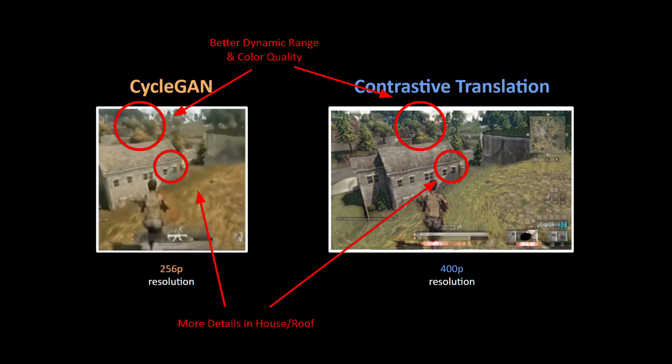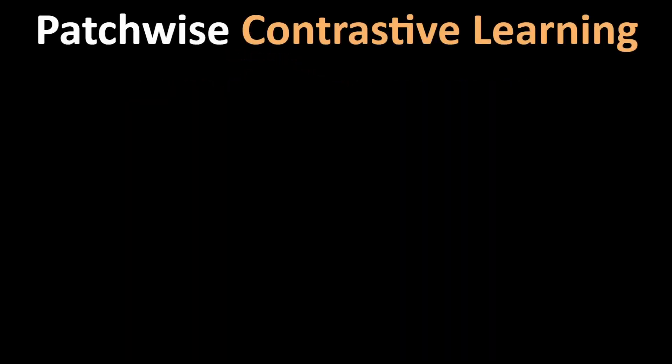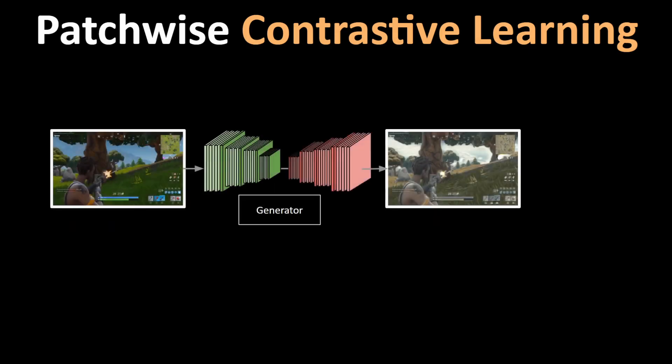This is a significant difference in the amount of computational power required compared to CycleGAN. What is different in this approach compared to CycleGAN? It now uses a patchwise contrastive learning framework which requires significantly less GPU memory and calculations compared to CycleGAN.